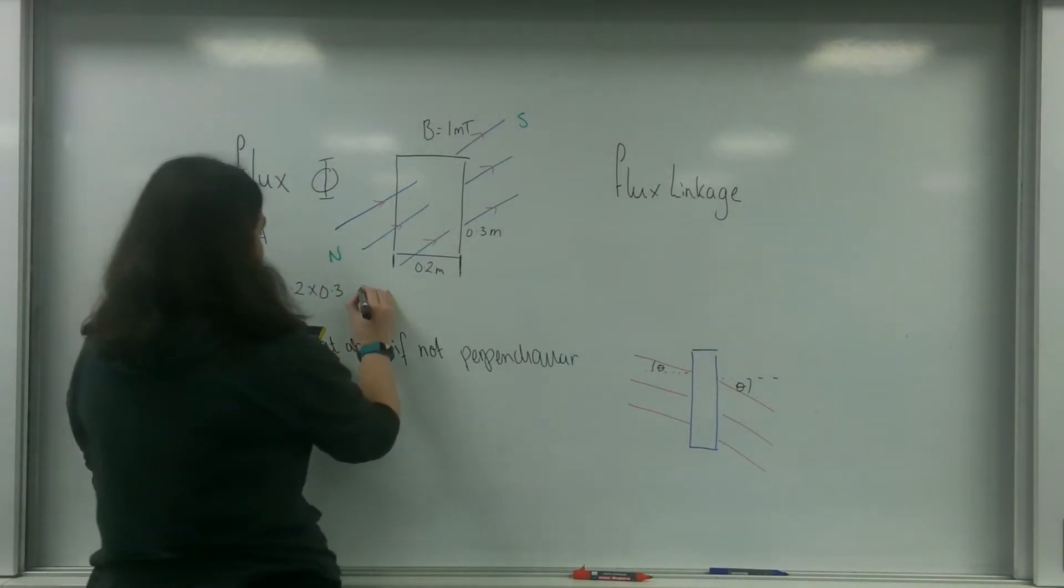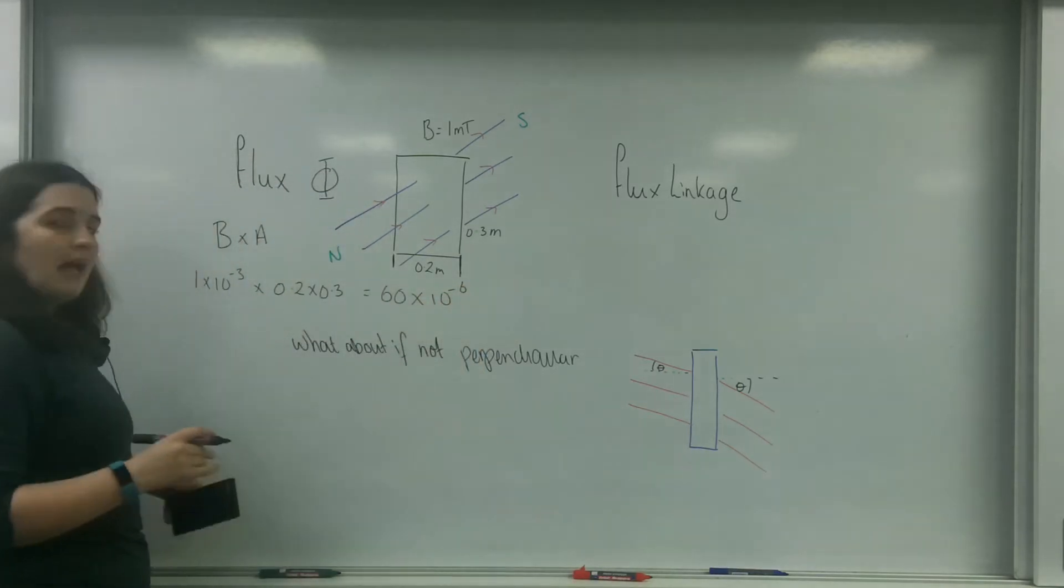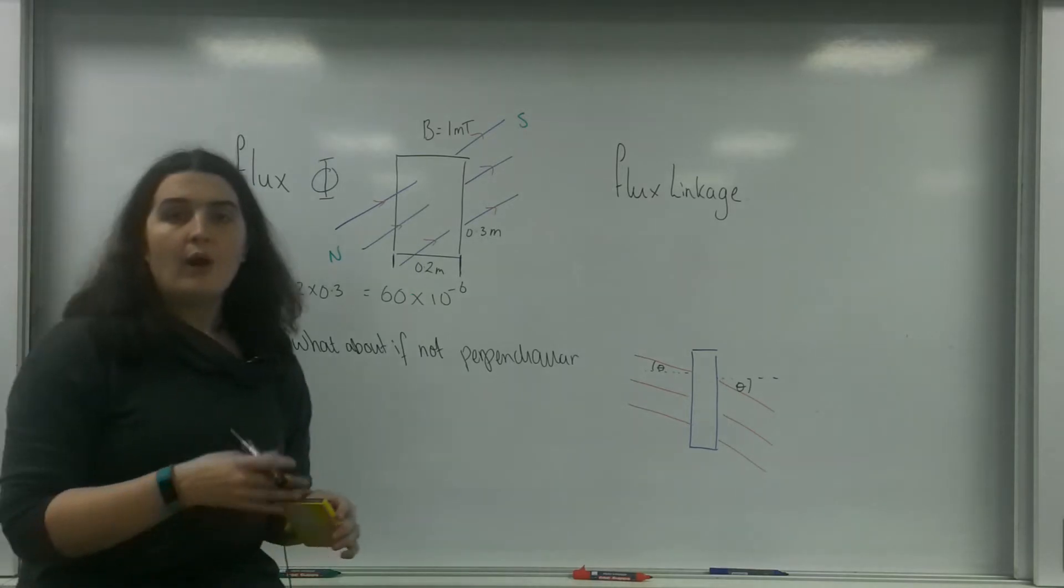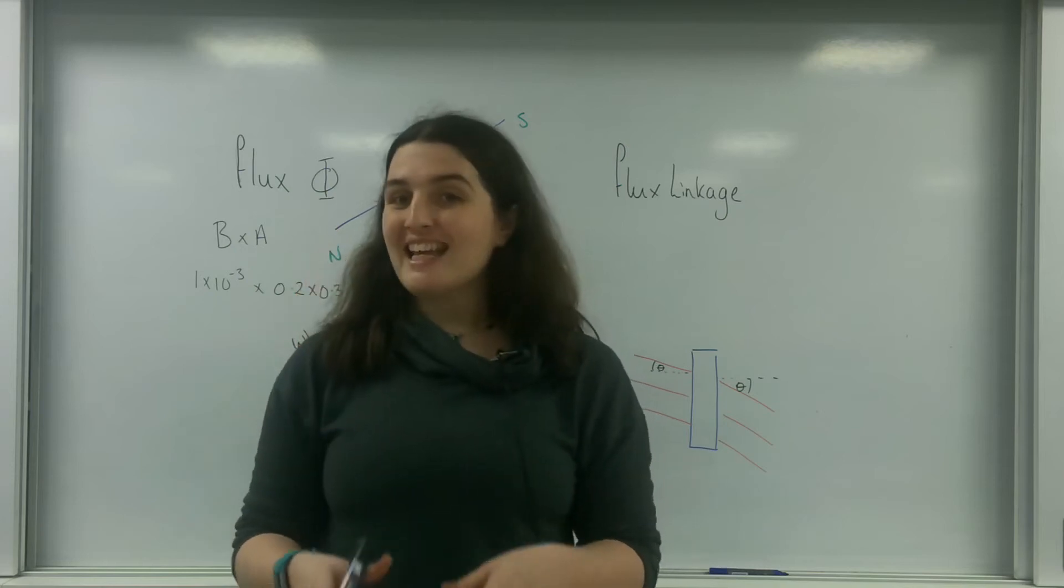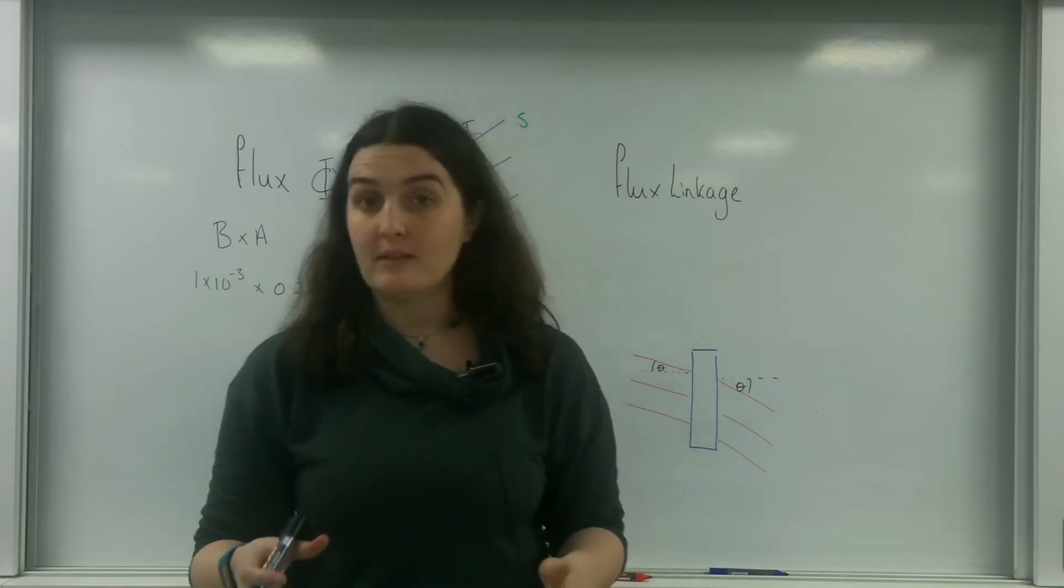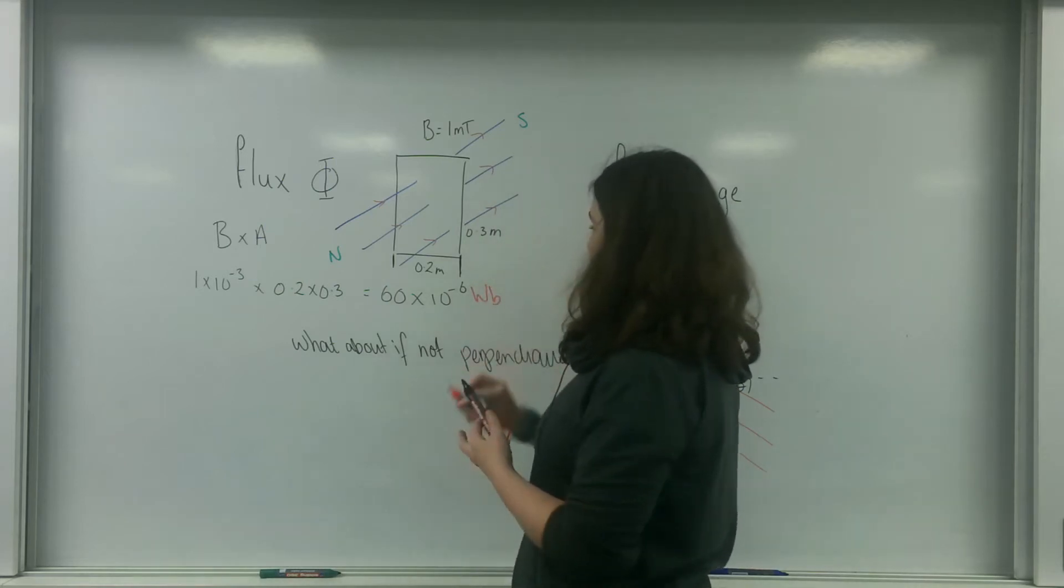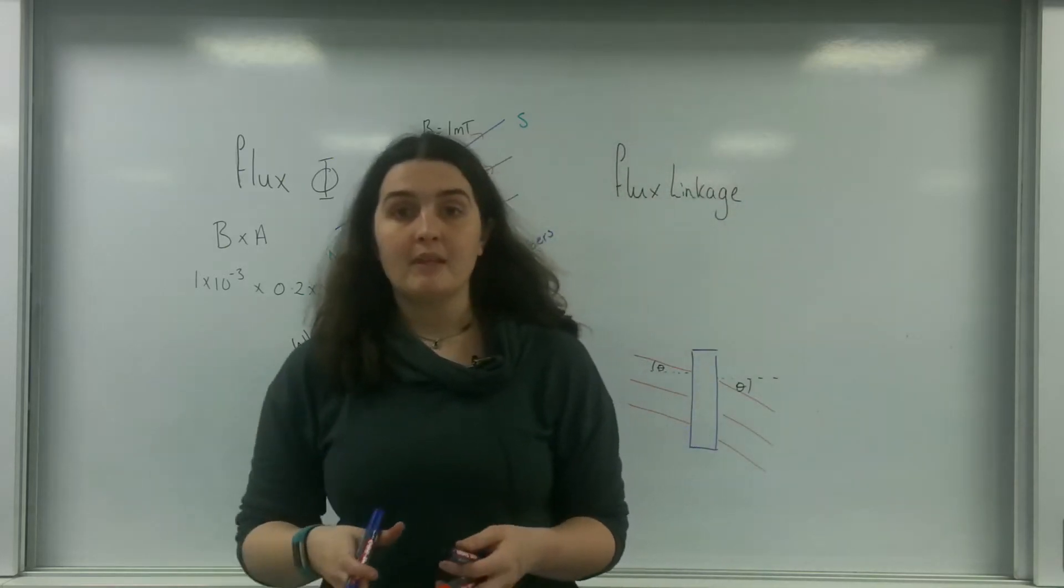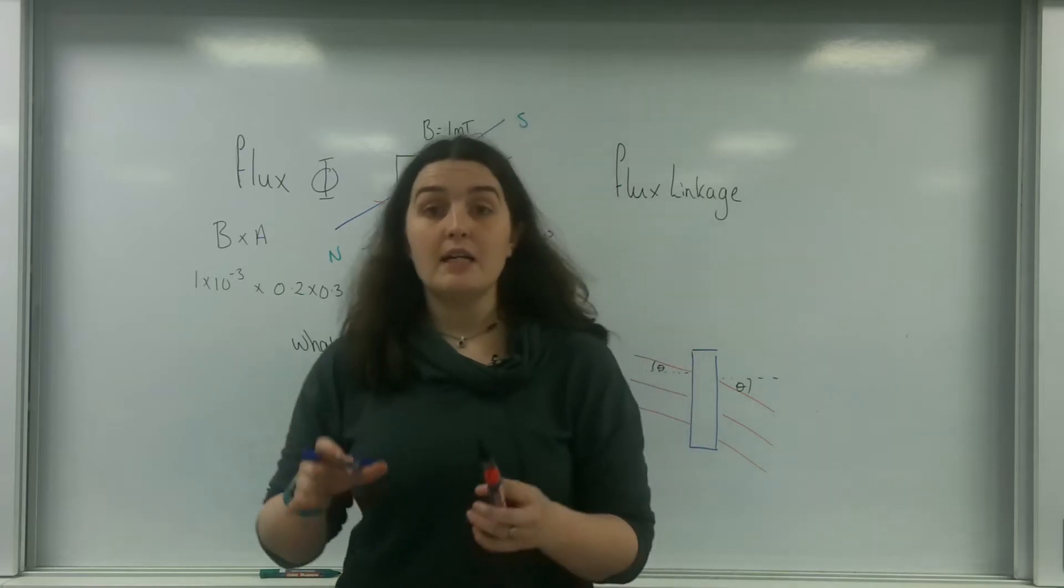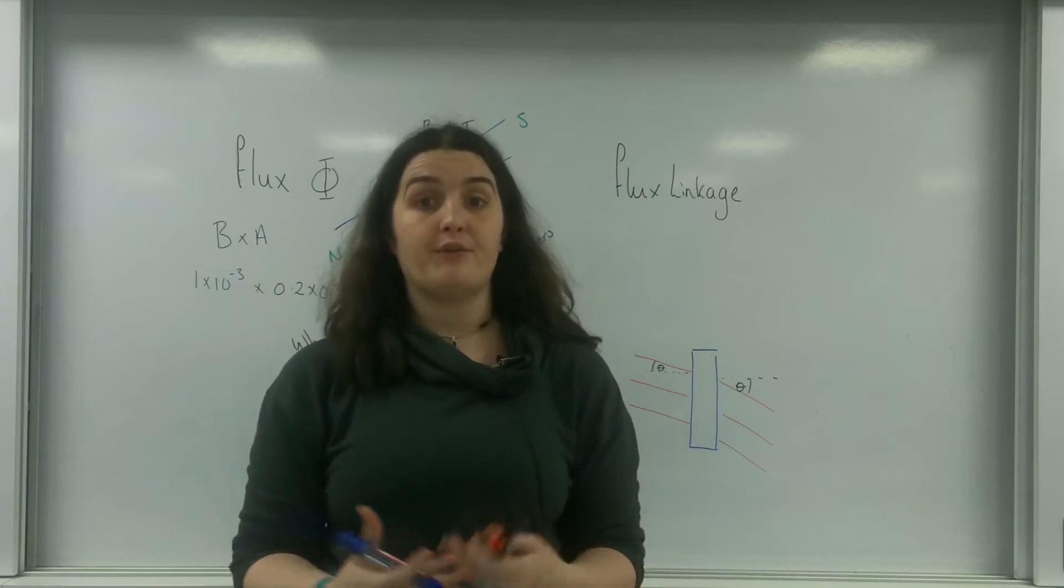That is going to be 60 times 10 to the minus 6. Now magnetic field strength is measured in Tesla. Flux is measured in something called Webers, or WB. So that is flux. Flux is how much the field lines are affecting an area that they are crossing through.